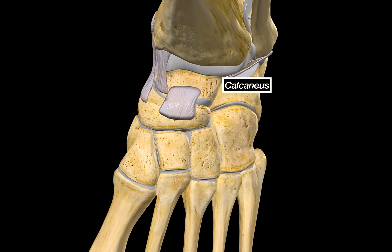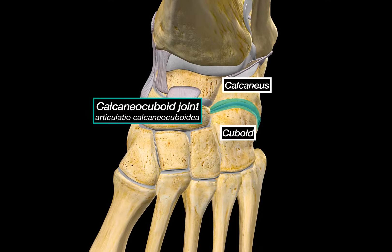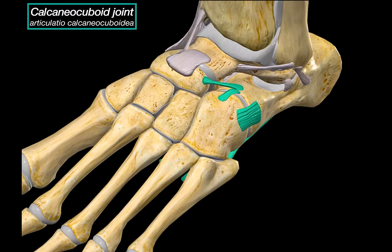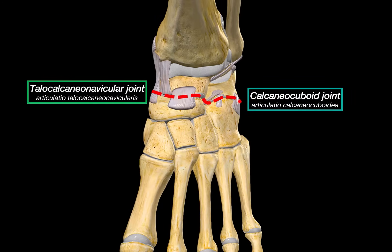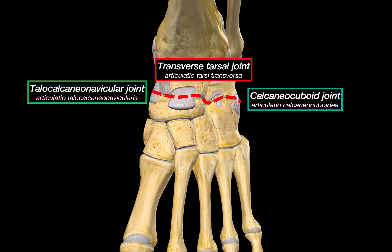Next is the calcaneal cuboid joint, between the calcaneus and the cuboid, stabilized by three ligaments: the bifurcate ligament, which usually splits into two branches attaching to both the navicular and the cuboid; the dorsal calcaneal cuboid ligament on top; and on the underside, the long plantar ligament. There is actually a joint line that passes through both the talo-calcaneo-navicular joint and the calcaneal cuboid joint — this is the transverse tarsal joint. It's not a separate anatomical joint, but it's functionally and clinically important because it allows the forefoot to rotate in relation to the hindfoot, contributing to pronation and supination, and it's also used as a reference during amputations and surgeries.